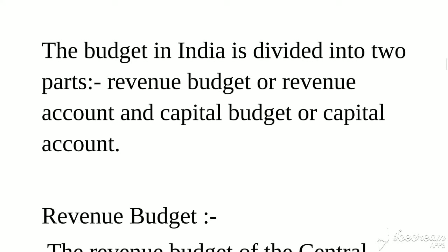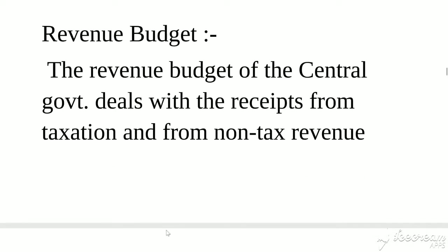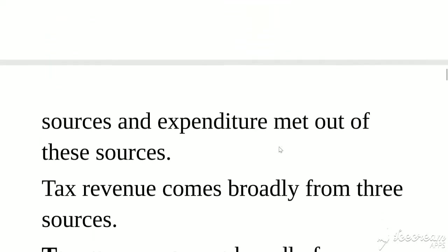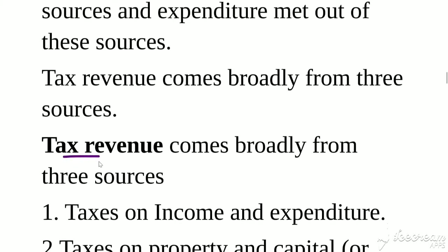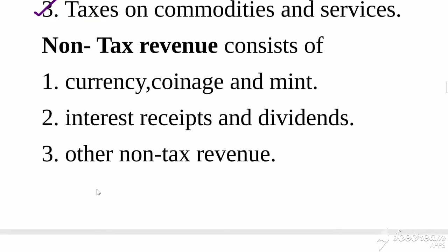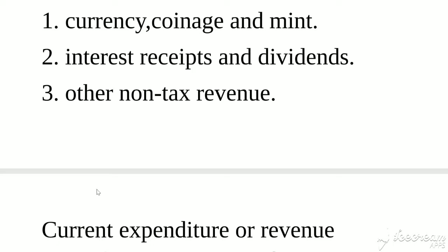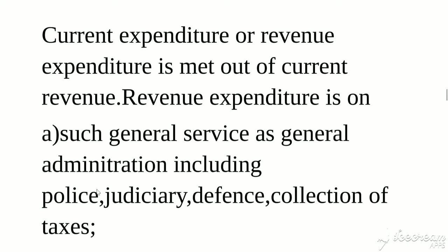The budget in India is divided into two parts: revenue budget, also called revenue account, and capital budget, also called capital account. The revenue budget of central government deals with receipts from taxation and non-tax revenue sources — there are two sources: tax and non-tax. Tax revenue comes broadly from three sources: taxes on income and expenditure, taxes on property and capital transaction, and taxes on commodities and services. Non-tax revenue consists of currency, coinage, interest receipts, dividends, penalties, fines, and governmental fees.